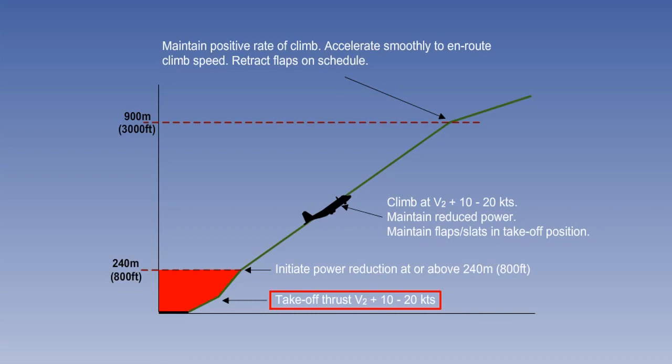V2 is take-off safety speed, the speed above which the aircraft is controllable in the event of an engine failure. The extra speed keeps the body angle below maximum, while still enabling a good rate and angle of climb.